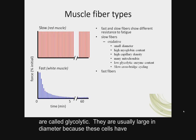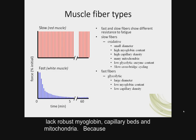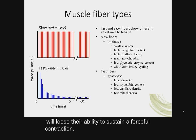In contrast, fast white fibers are called glycolytic. They are usually large in diameter because these cells have accumulated a lot of cytoplasmic proteins involved in glycolysis. They also lack robust myoglobin, capillary beds, and mitochondria. Because glycolysis doesn't generate a lot of ATP, over time the muscle cells will lose their ability to sustain a forceful contraction.